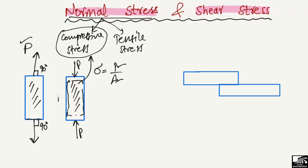For example, I take the cross section of this object, so it will look like this. It may have any height and any width of the beam or column. If you put this load here over the area of the cross section, we will find the normal stresses. Keep in mind that normal stress is always created due to the load acting perpendicularly to the surface of the area.